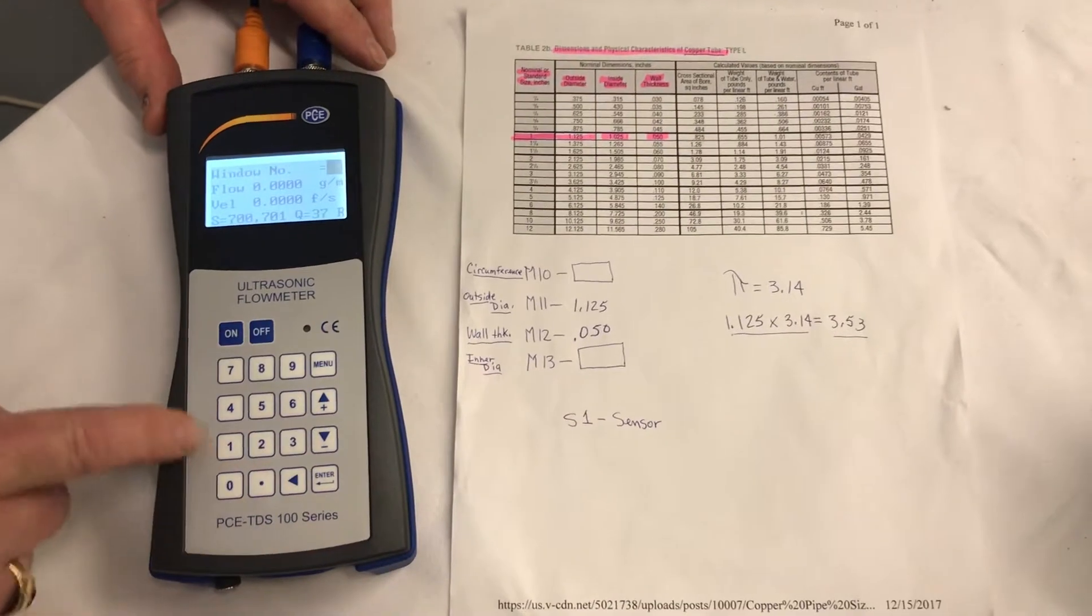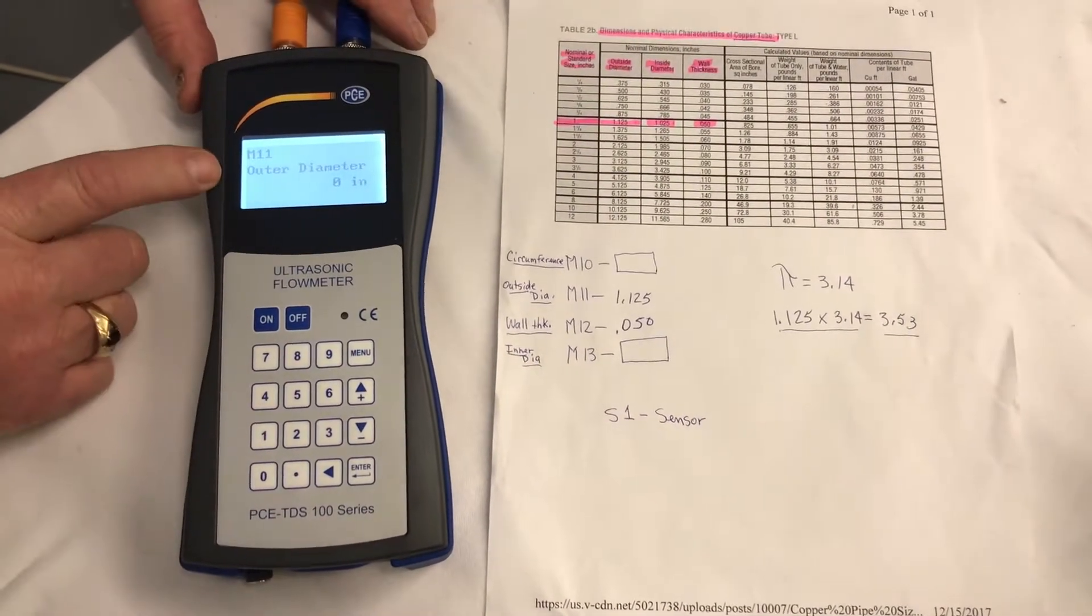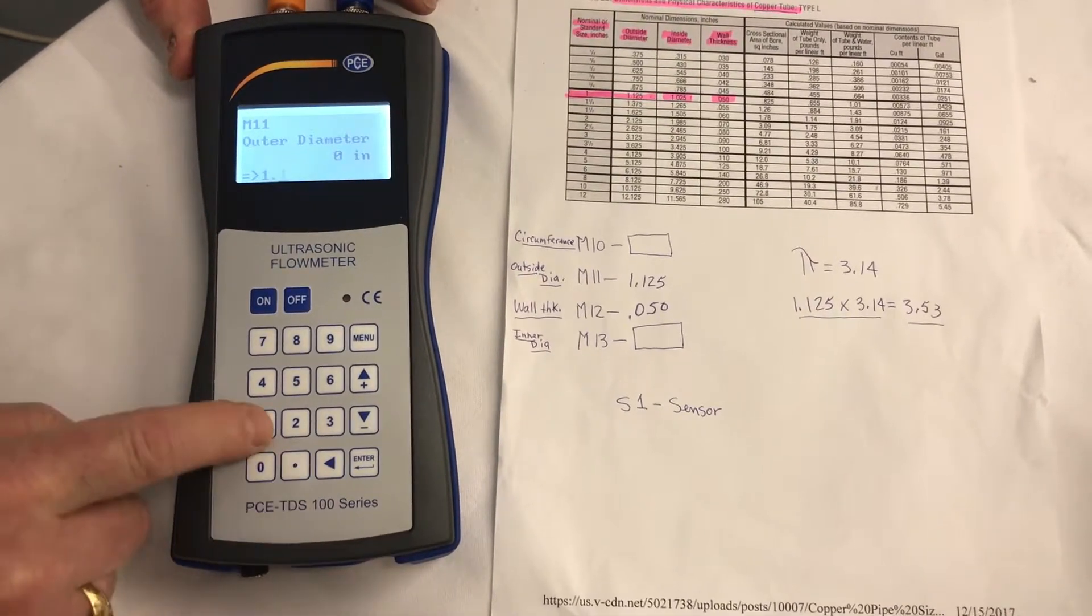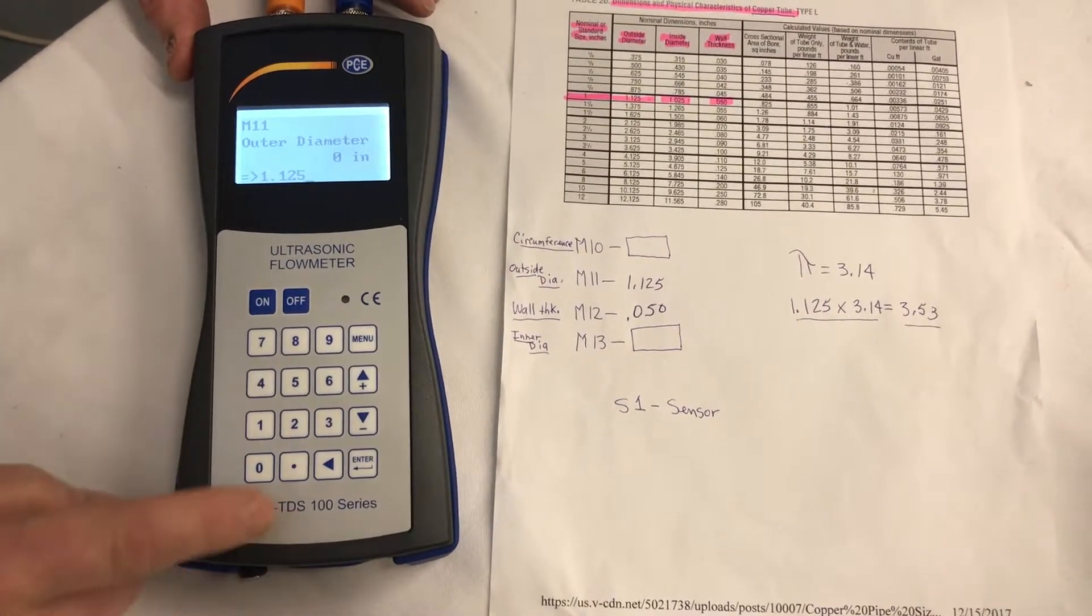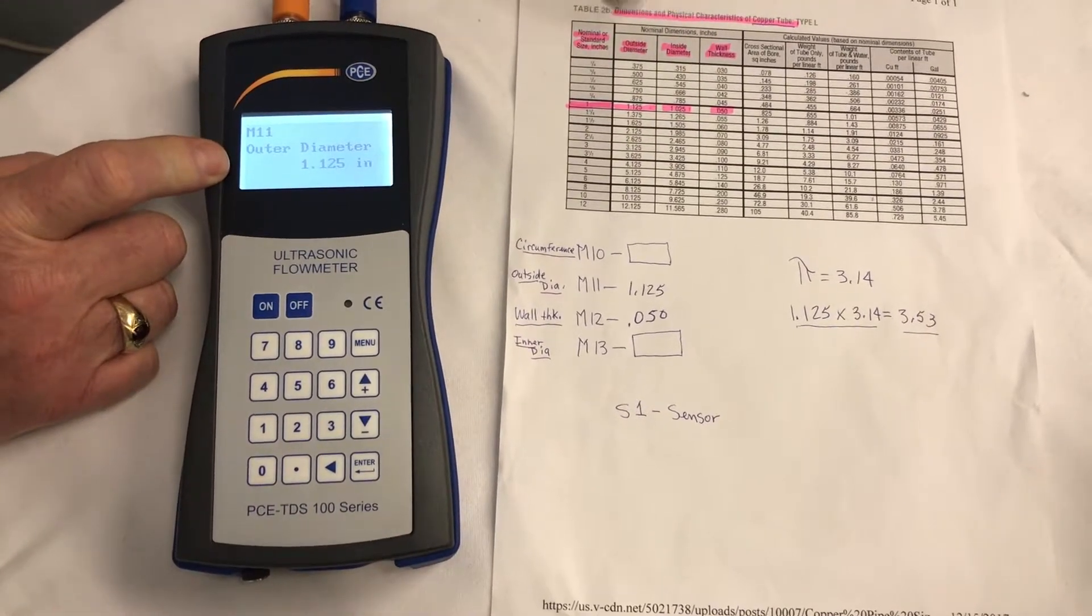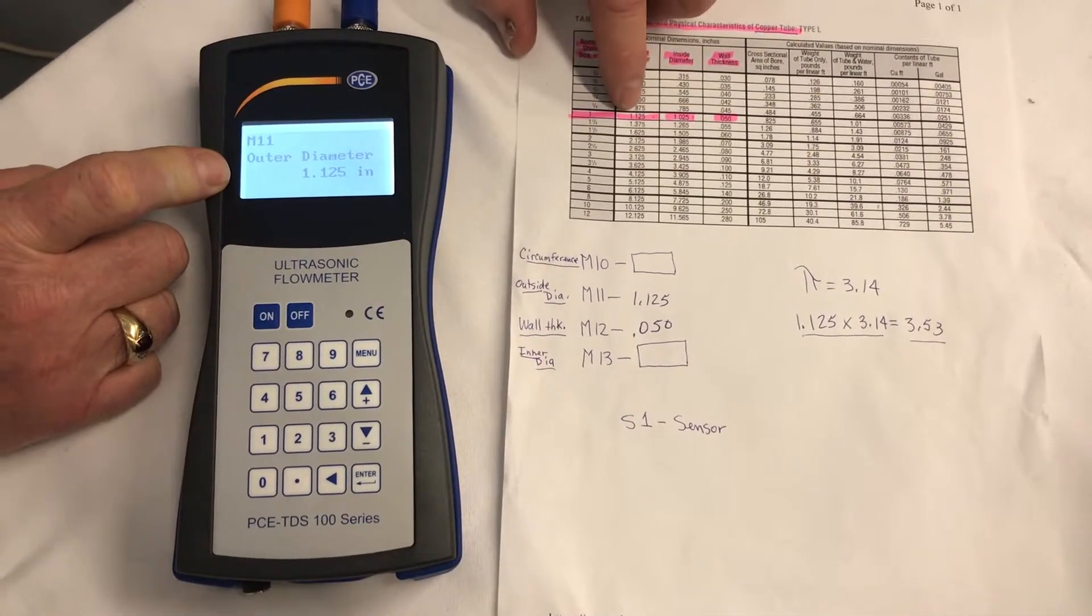On the meter, we go to menu 11, and there's our outer diameter, and we enter 1.125, enter. Now we have the outside diameter at 1.125.